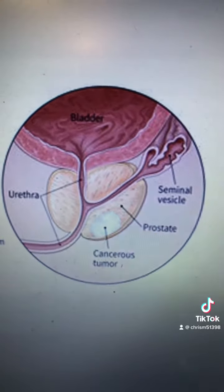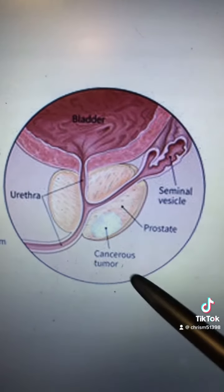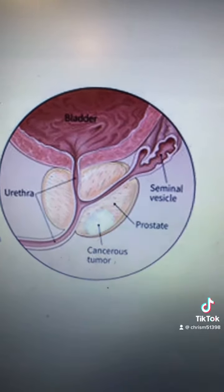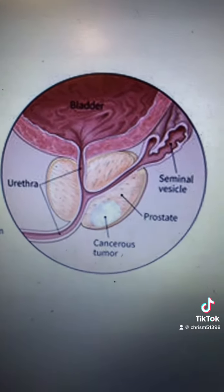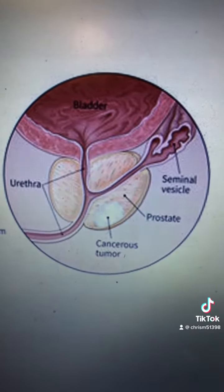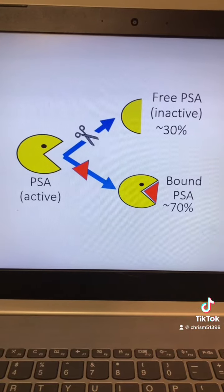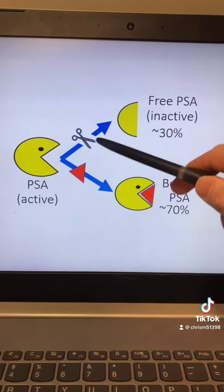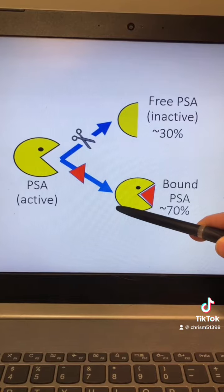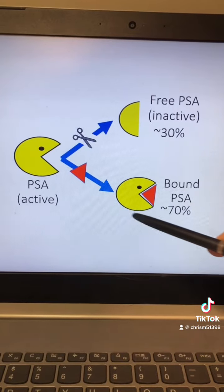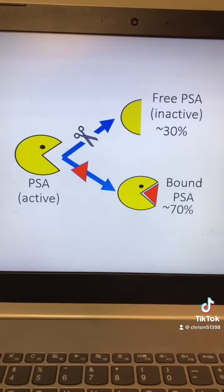Now in prostate cancer, due to architectural disruption by the tumor, more PSA can leak into the serum and escape proteolytic processing. Meaning that instead of being inactivated, more active PSA escapes into the serum and is then bound by these proteins. That is why you see a lower percentage of free PSA in prostate cancer.